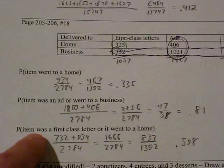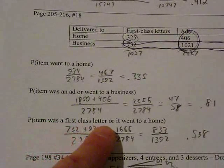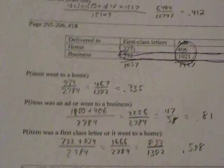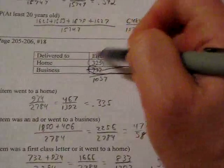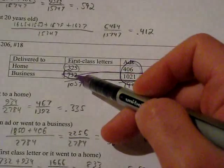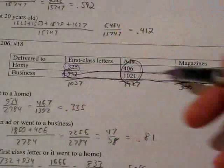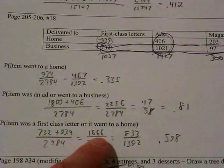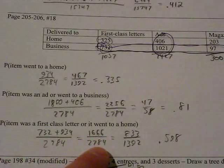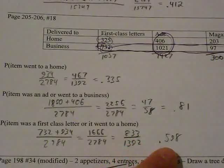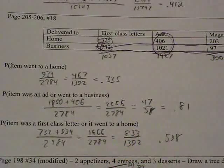And now the final one. What is the probability that the item was a first class letter or it went to a home? Alright, well that right there is interesting because what we are going to need is all of the ones that went to the home, so we need this first row, and we need to add the first class letter, 752. So again we need this whole row and this blank right here that was a first class letter to a business. So that is 732 and 934, which gives you a total of 1,666 over 2,784, reducible to 833 over 1,392, which is about 60% or 59.8%.